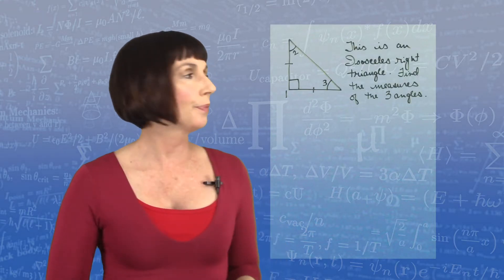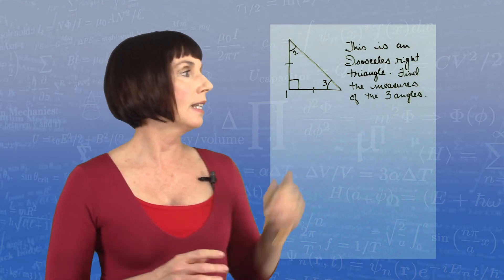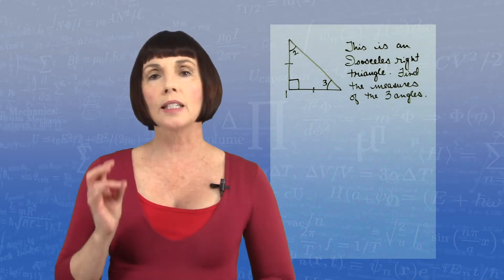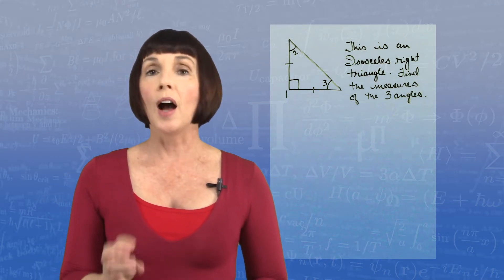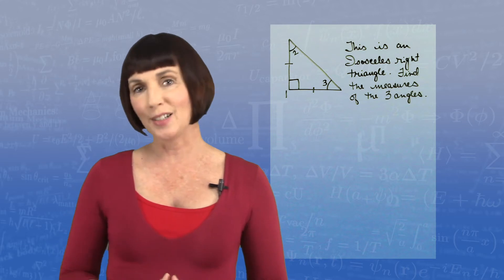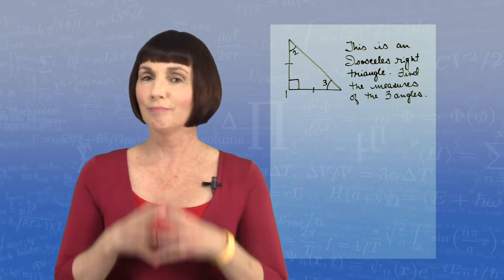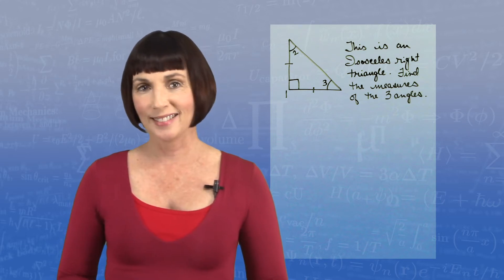Here's our first problem. This is an isosceles right triangle. Find the measures of all three interior angles. Give it a try.